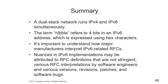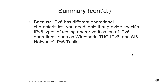In summary: a dual stack network runs IPv4 and v6 simultaneously. Remember a nibble is 4 bits and a byte is 8 bits in an IPv6 address expressed using hexadecimal characters. It's important to understand how major manufacturers interpret v6-related RFCs — pro tip, they're different — so always test, test, test. Nuances in v6 implementations can be attributed to RFC definitions that aren't stringent or clear, various RFC interpretations by software and hardware engineers, various versions, revisions, patches, and software bugs unique to each device. Because v6 has different operational characteristics, you need tools providing specific v6 testing or verification, including Wireshark, THC IPv6, and SI6 Networks' IPv6 toolkit.